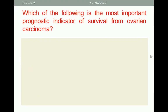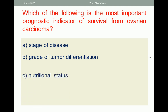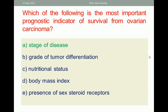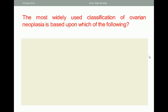Which of the following is the most important prognostic indicator of survival from ovarian carcinoma? A. Stage of disease; B. Grade of tumor differentiation; C. Nutritional status; D. Body mass index; E. Presence of sex steroid receptors. The one best response here is A — stage of disease.